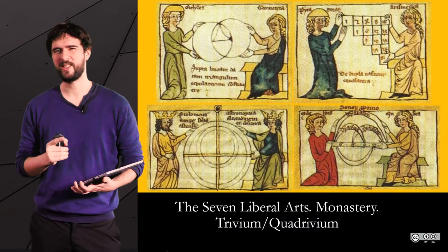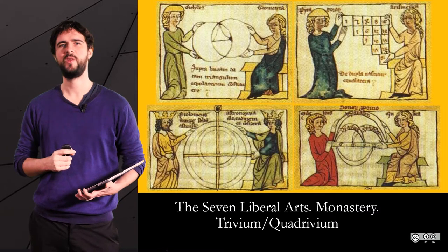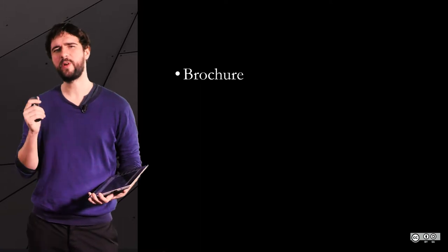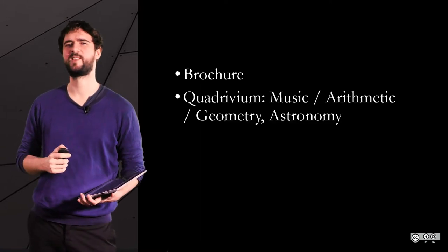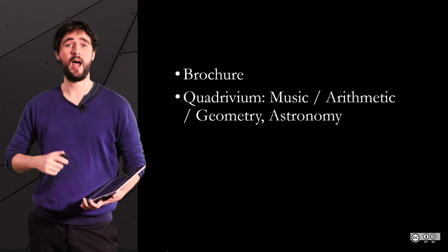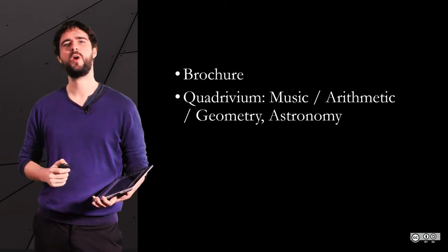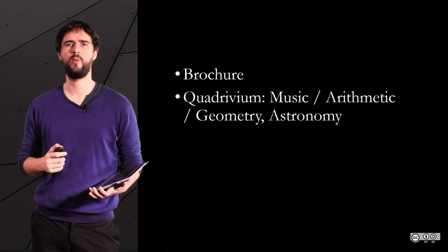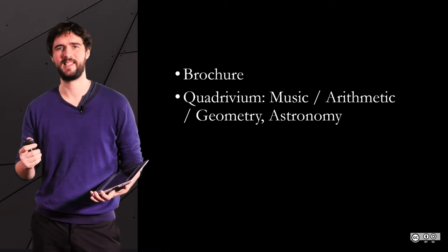We selected a couple of pictures illustrating the curricula — you can see them as an old form of brochure. The quadrivium was composed of disciplines such as arithmetic, music, geometry, and astronomy, and was related to what we would call nowadays the exact sciences.